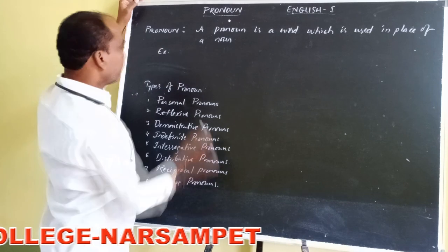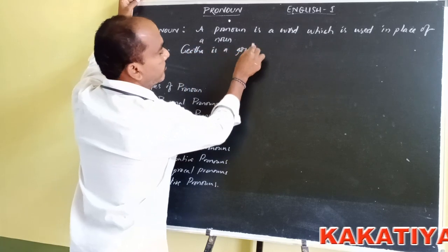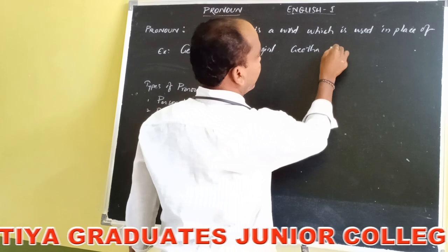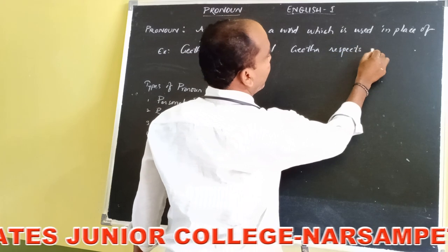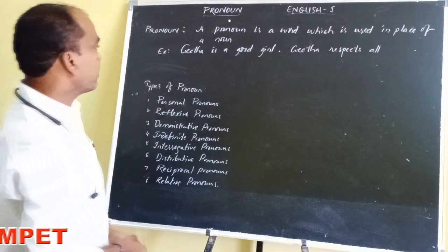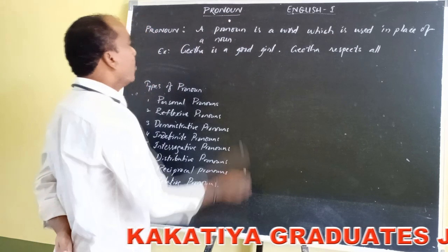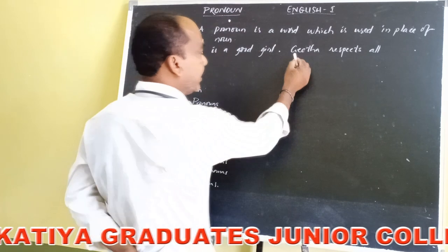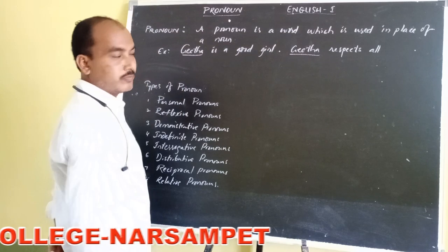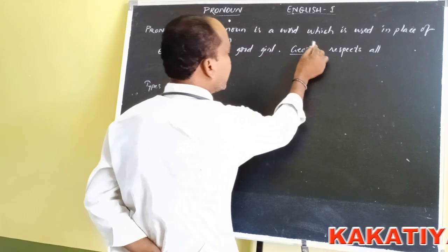Let us see one example. Gita is a good girl. Gita respects all. Here I wrote two sentences. In both sentences we are speaking about the same person — Gita. Gita is mentioned twice. In place of the noun Gita in the second sentence, we can use another word.